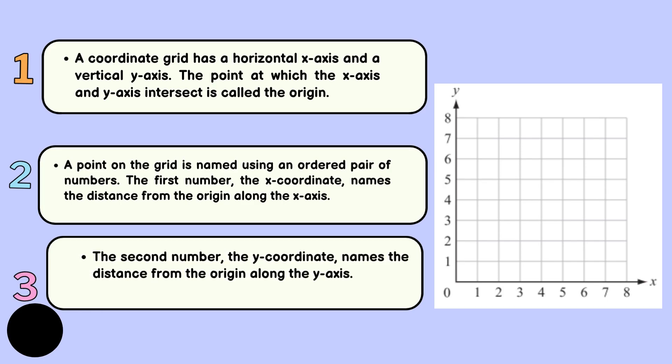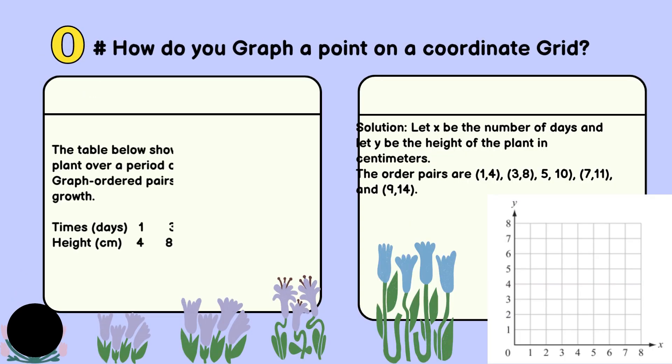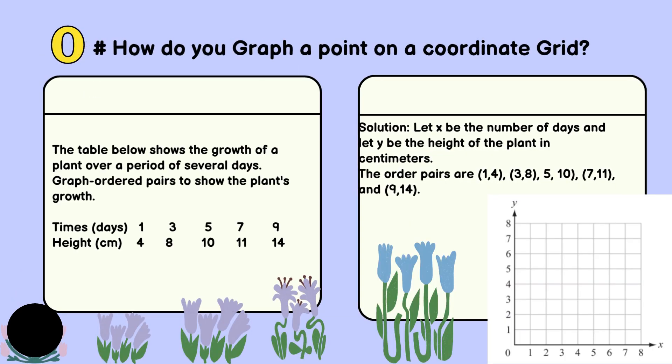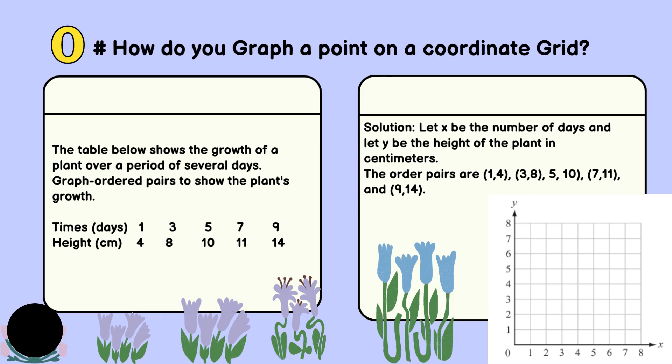A point on the grid is named using an ordered pair of numbers. The first number, the x-coordinate, names the distance from the origin along the x-axis. The second number, the y-coordinate, names the distance from the origin along the y-axis.